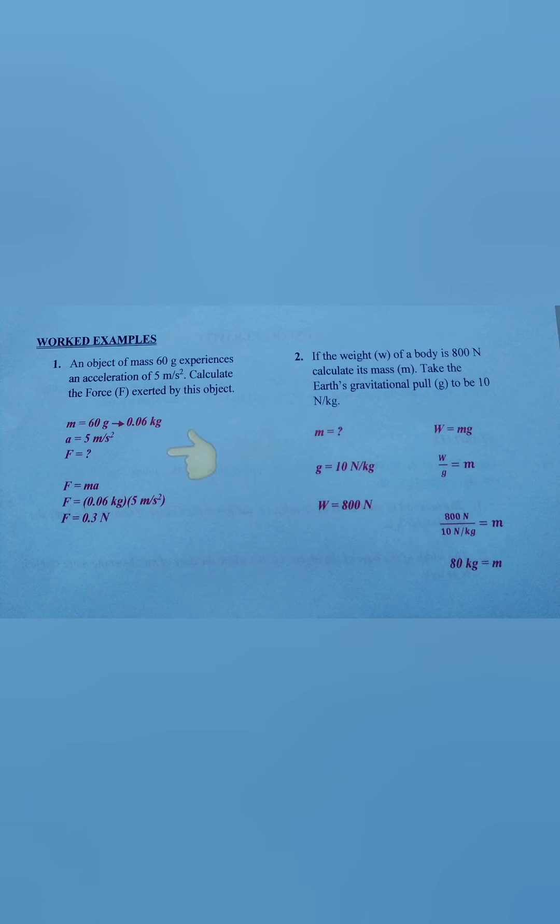The next thing to do is to convert. Convert to SI units. The acceleration is already in its SI unit form, but the mass is not. In which case, we have to convert the 60 grams to kilograms, which will ultimately become 0.06 kilograms.